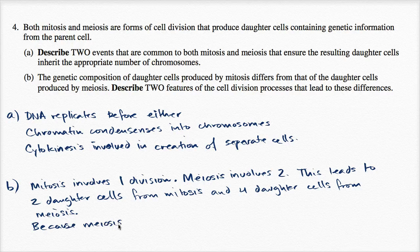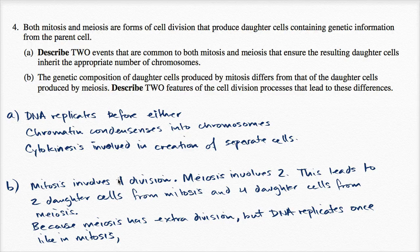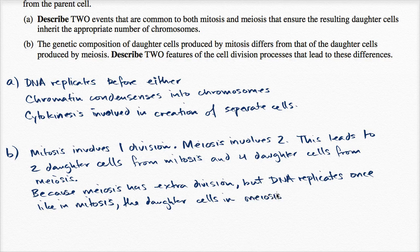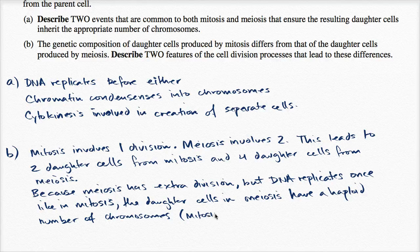Because meiosis has an extra division, but DNA replicates only once — just like in mitosis — the daughter cells from meiosis end up with half the number of chromosomes. They have a haploid number of chromosomes, whereas the daughter cells from mitosis have a diploid number of chromosomes.